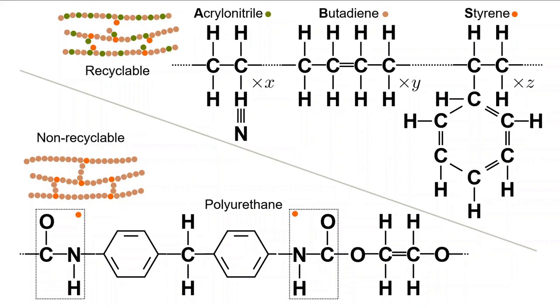The big difference in the structure between these two polymers is that ABS is a branched polymer with, largely, random copolymerization, while polyurethane is a cross-linked or networked polymer. Polyurethane has covalent bonds acting between chains.